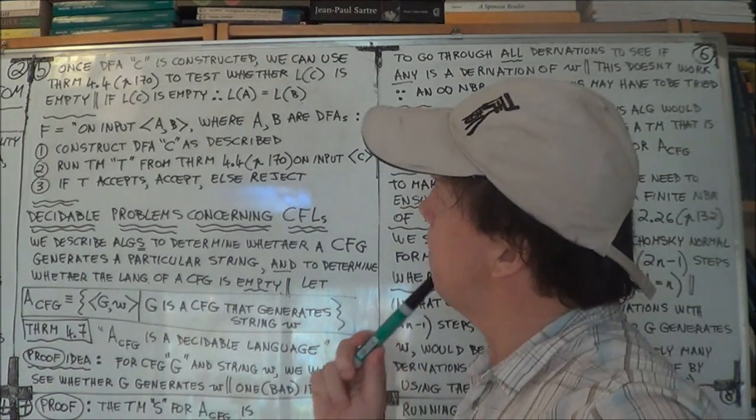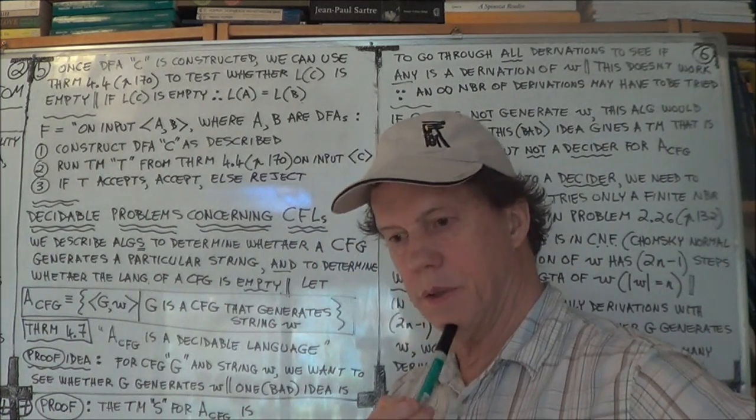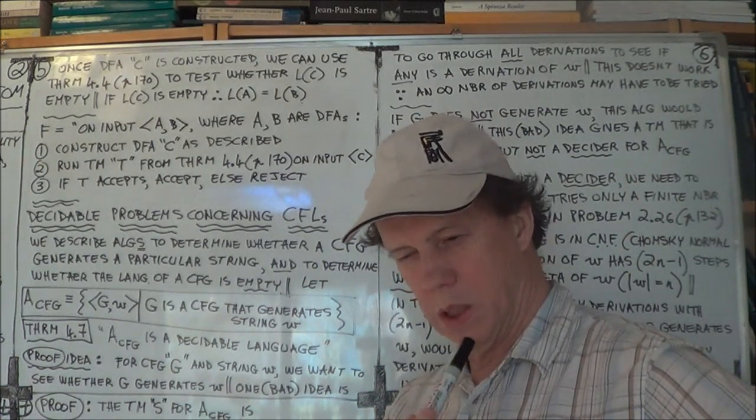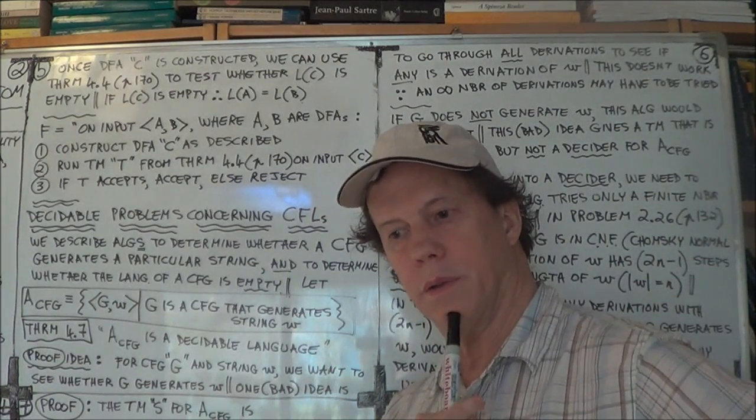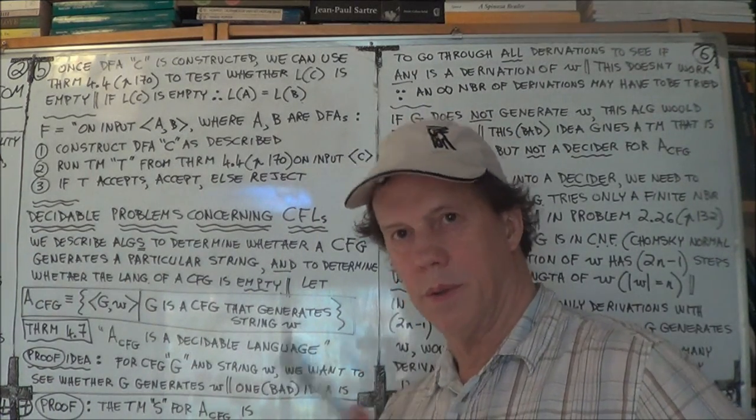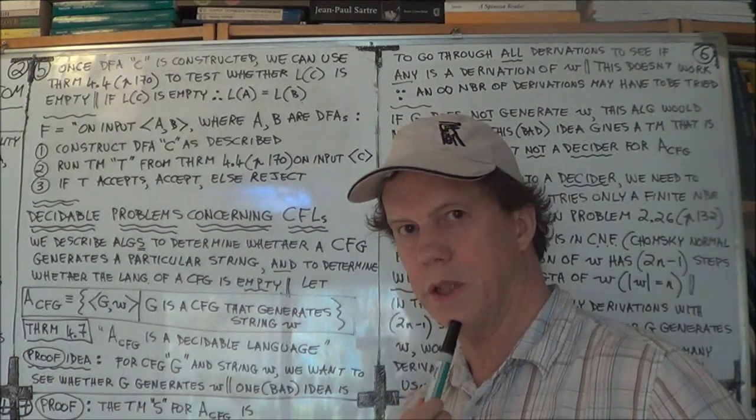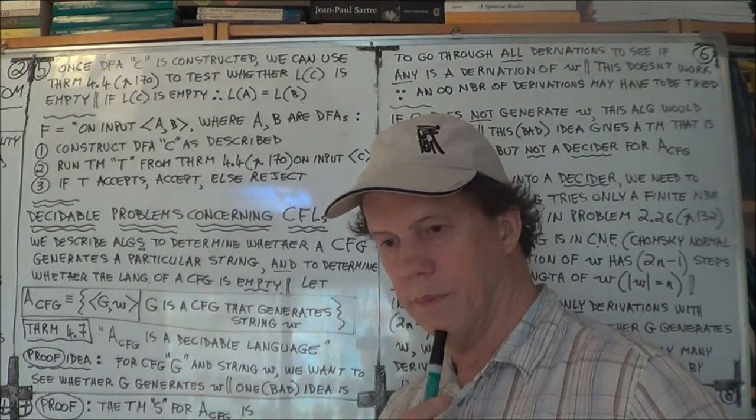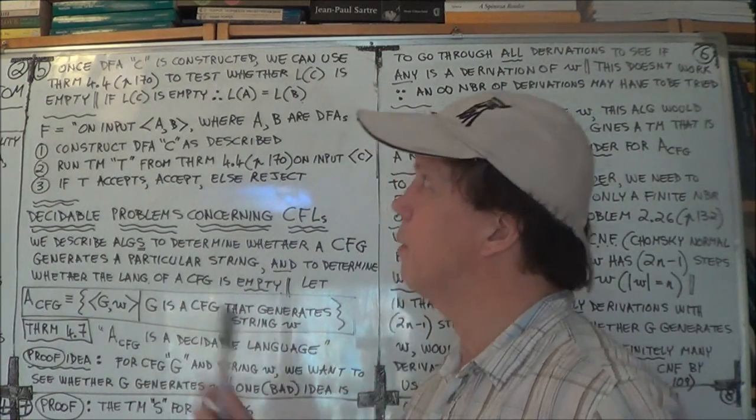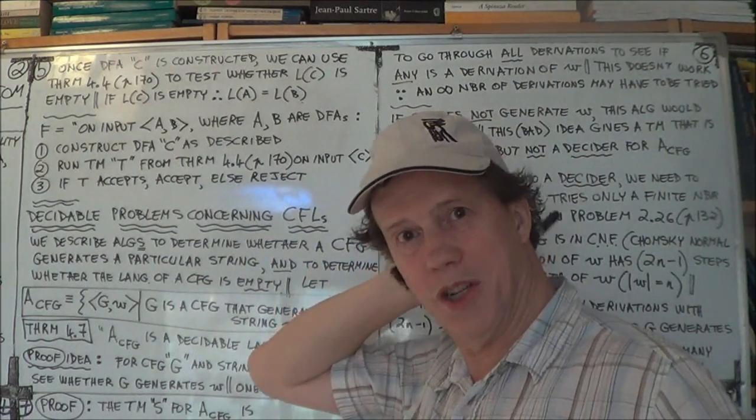Just moving straight on, so using the techniques for proving closure of regular languages under the operations of union, intersection, and complement, use those techniques to help you construct this new DFA called C using the two DFAs A and B. So assume that you've constructed it. You'd have your Turing machine do all this, of course.